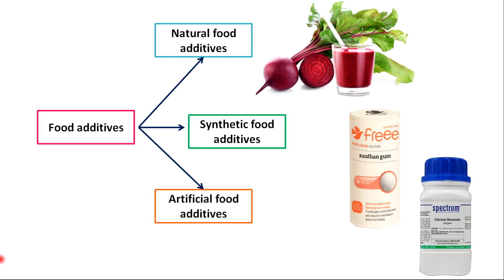which is used as a food thickener or stabilizer. It is created when sugar is fermented by a type of bacteria called Xanthomonas campestris. Also, food additives may be entirely artificial, meaning they are synthetically produced and are not copies of any compounds found in nature — for example, calcium benzoate.